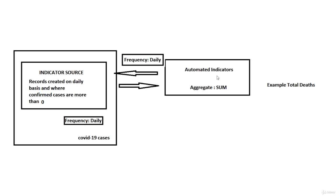So let's create our indicator source and then our automated indicators so we can have the result for the total number of deaths, number of recovered, number of confirmed - the global result.